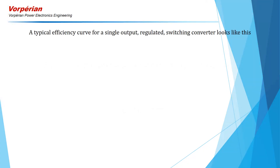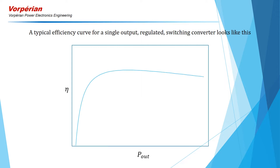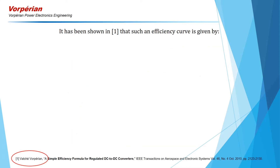A typical efficiency curve for a single output regulated converter looks like this. Some manufacturers provide this curve for single output converters, but for multiple output converters such a curve cannot be provided simply because the output power can be any combination of the individual output powers. It has been shown in the reference article at the bottom of the screen that such an efficiency curve is given by the following equation.